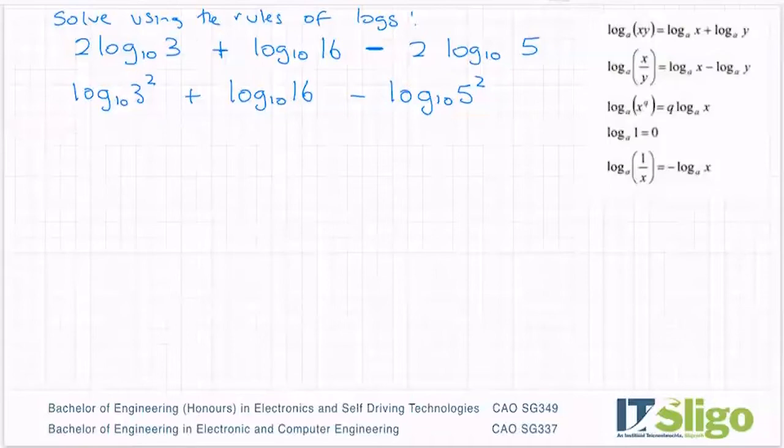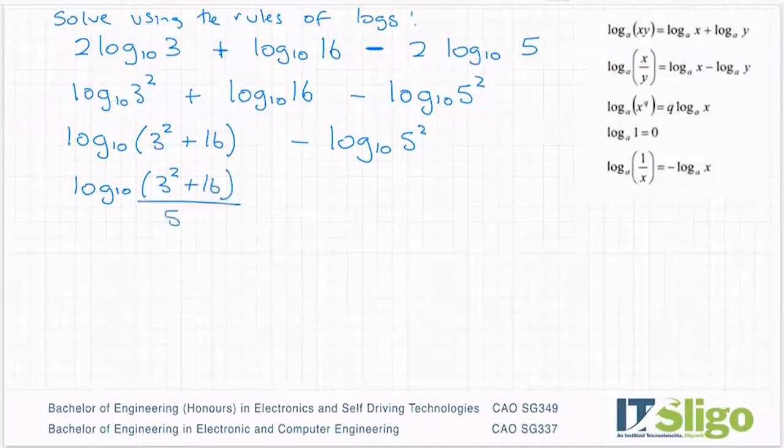So this one is going to become log to the base 10 of 3 cubed plus 16. And then I have minus log to the base 10 of 3 squared plus 16 over 5 squared. That's generally the order we do it in.